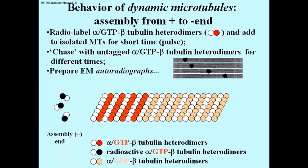If you take some microtubules out a little later during the chase — the second autoradiograph from the top — you find that the silver grains are no longer at the very end but somewhere within the microtubule. If you wait a little longer, radioactivity appears near the center of the microtubule. And if you wait still longer during the chase, the radioactivity is once again near an end of the microtubule.